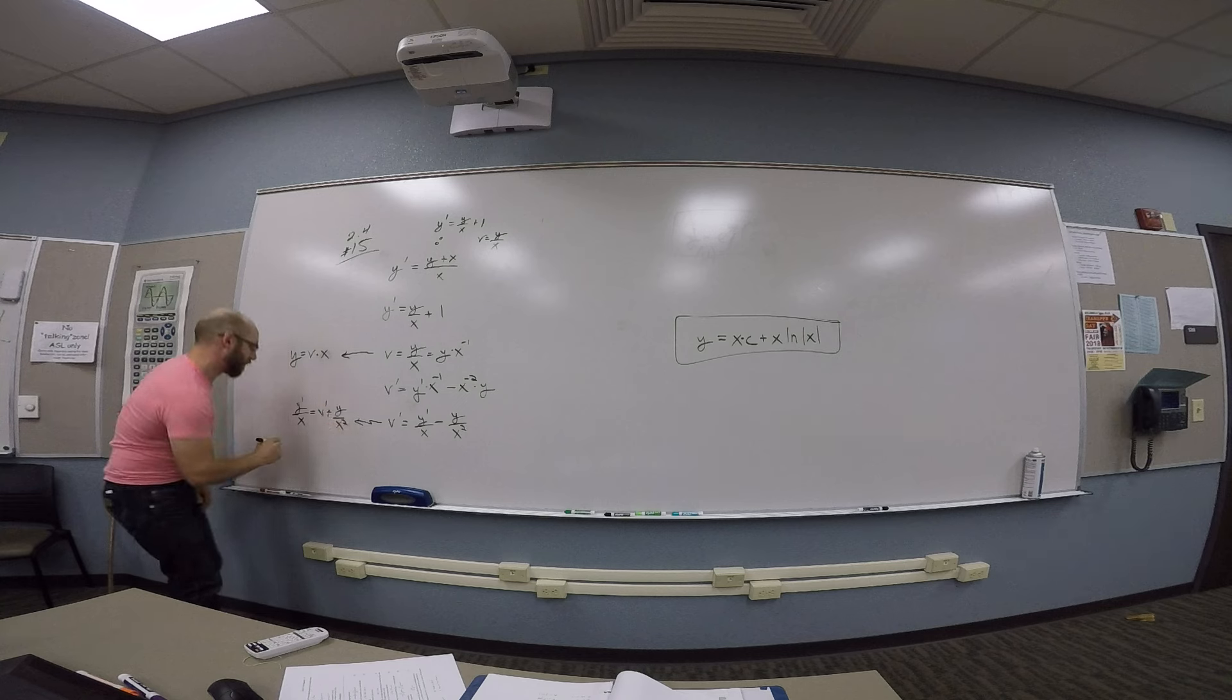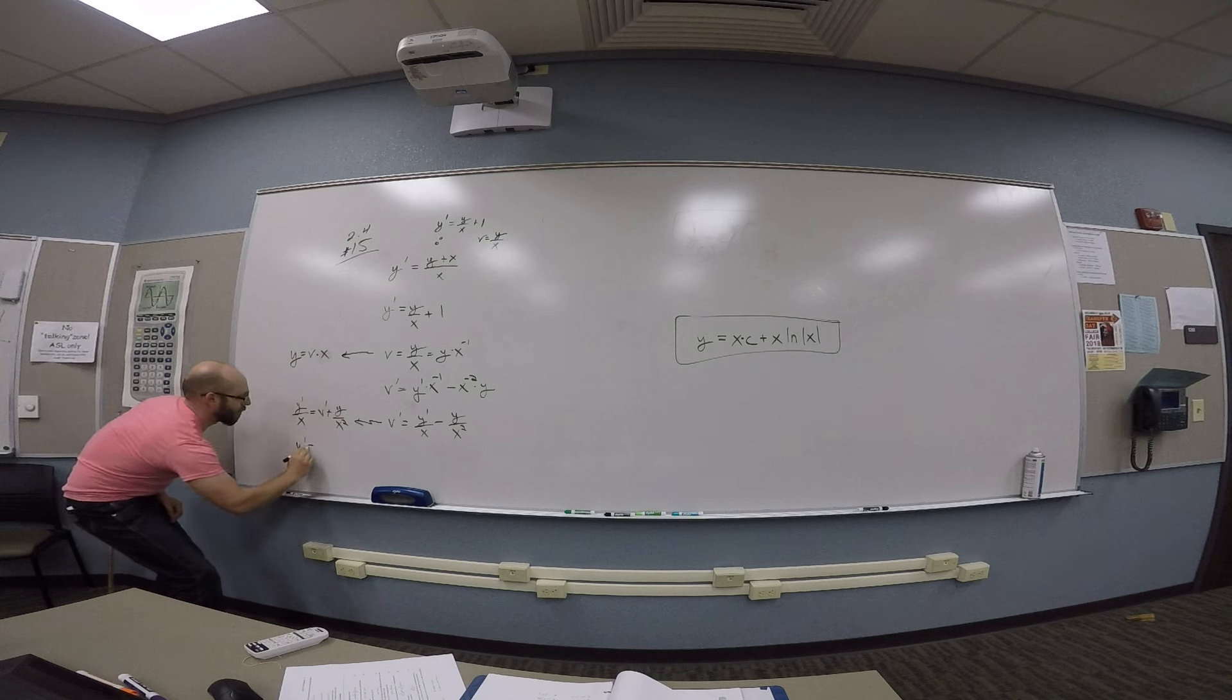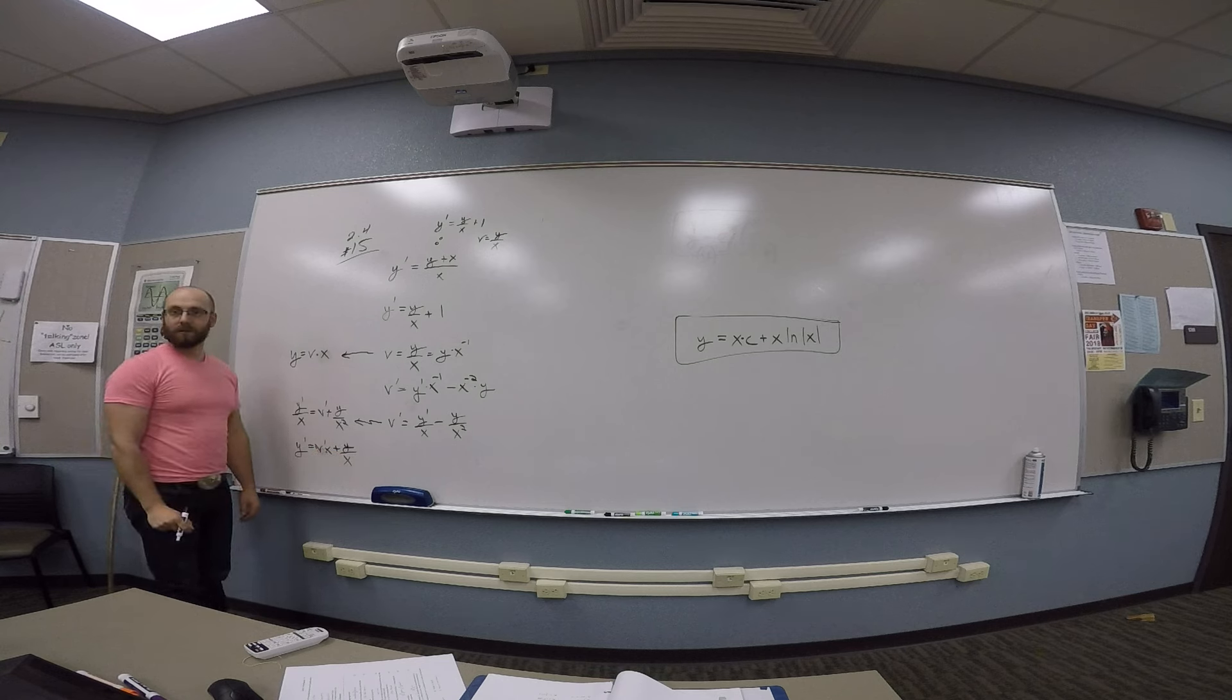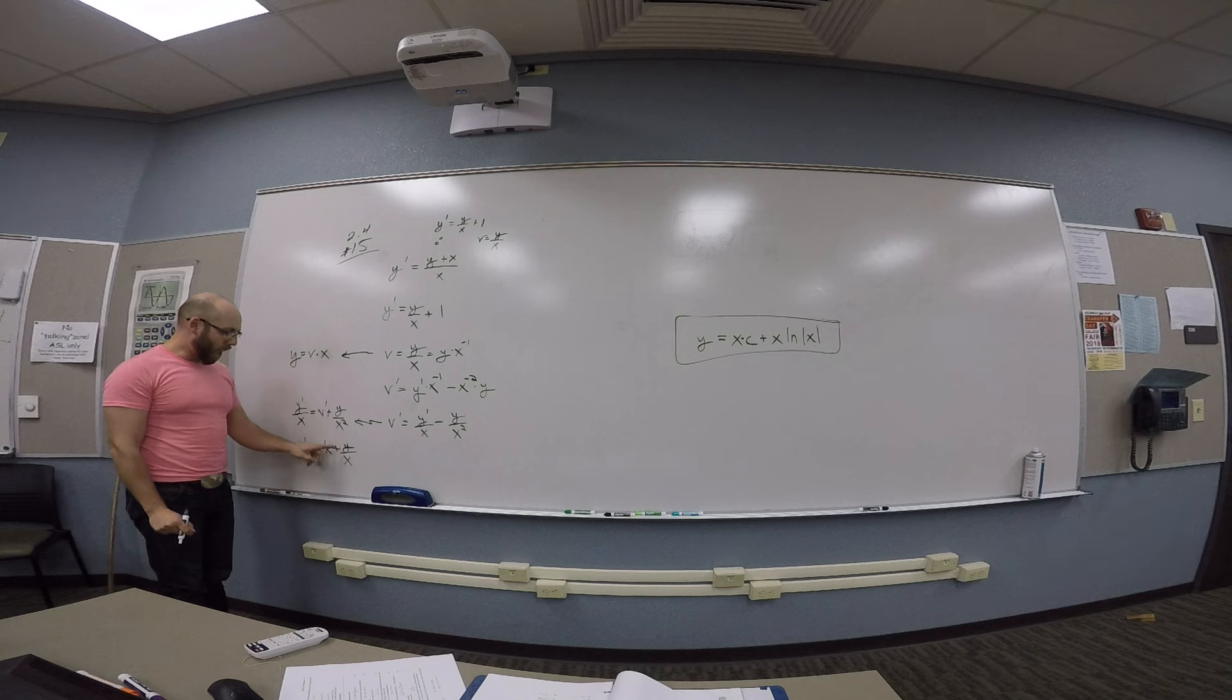Multiply both sides through by an x. Get y prime is v prime x plus y over x. But y was v times x.